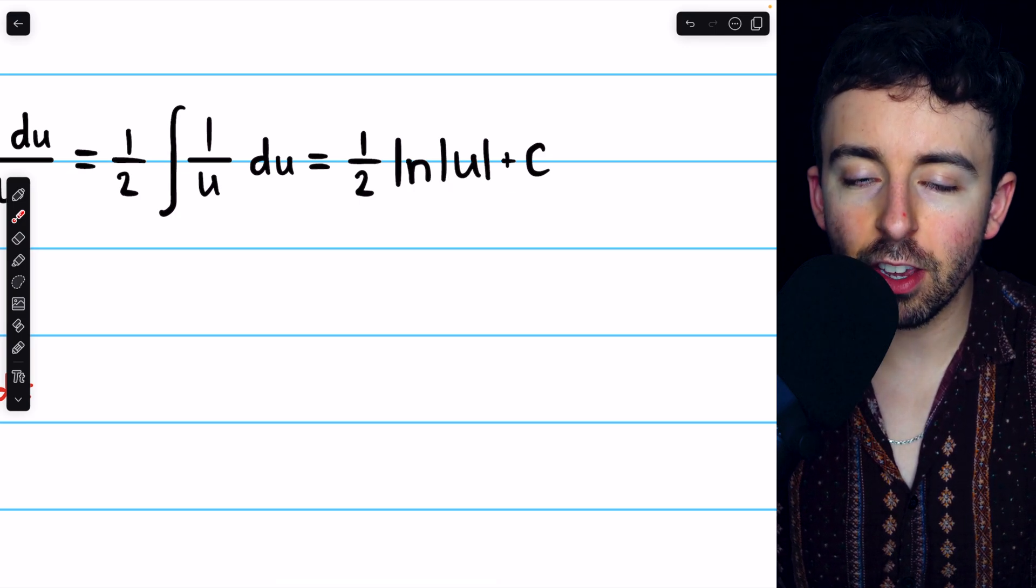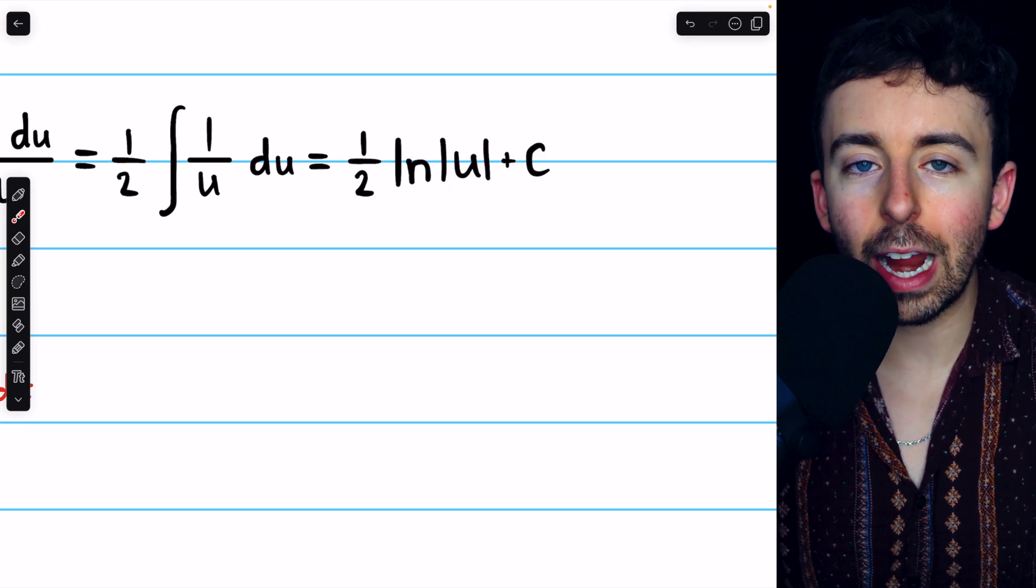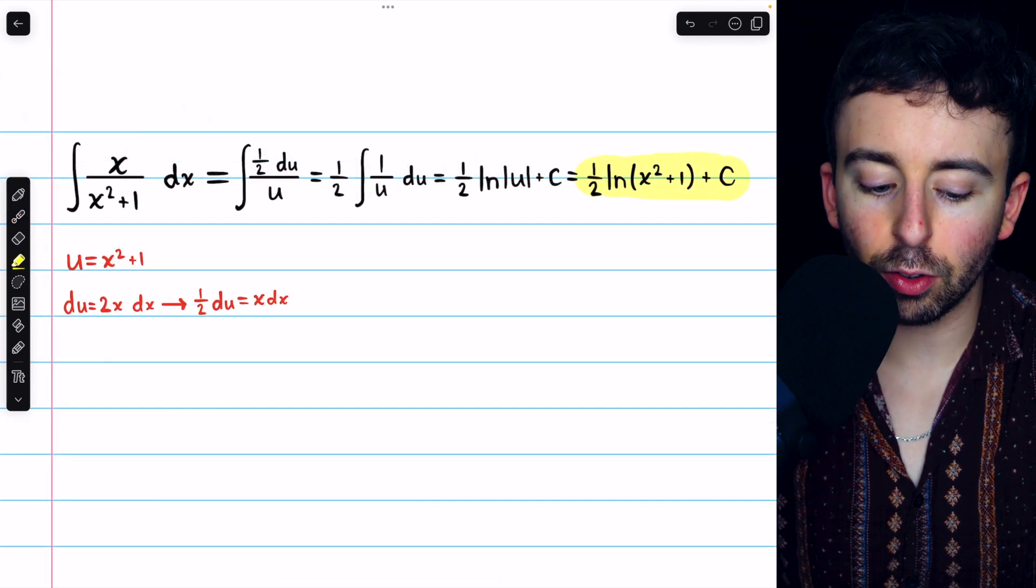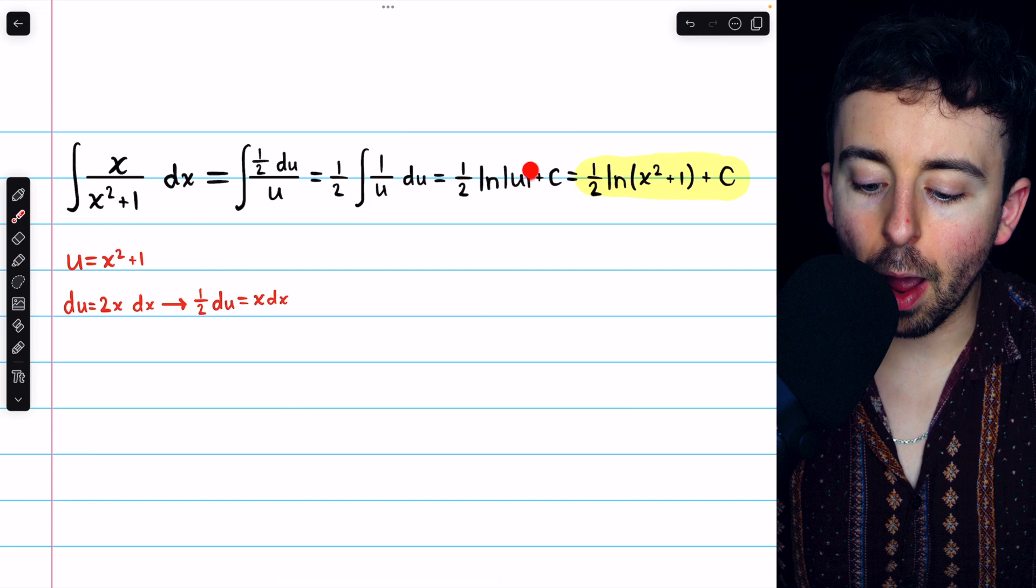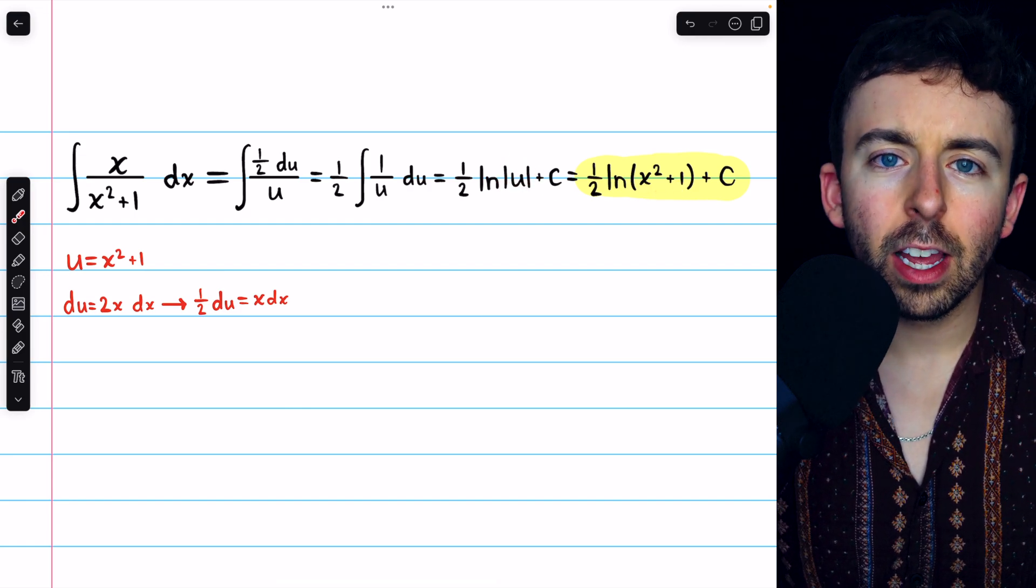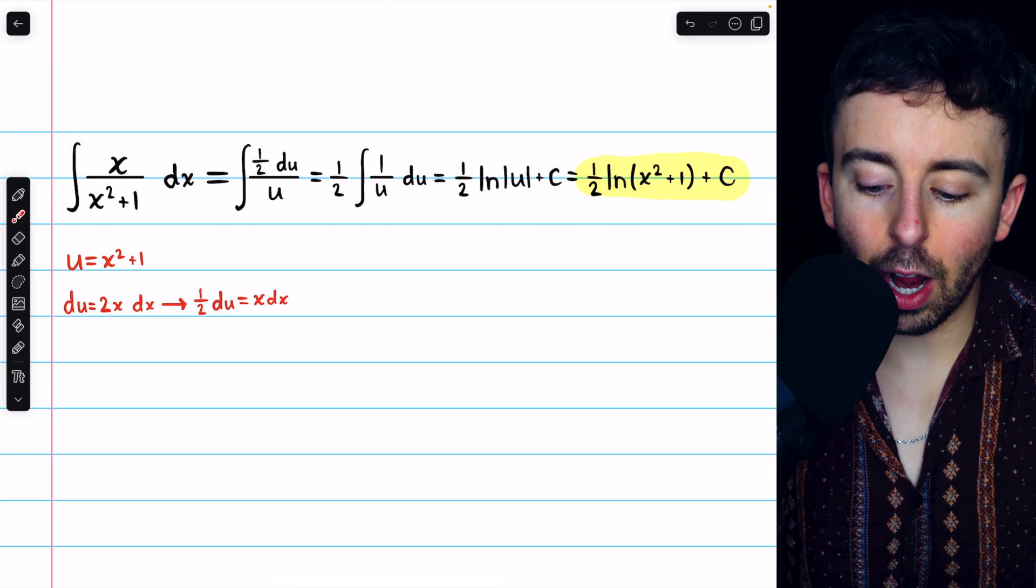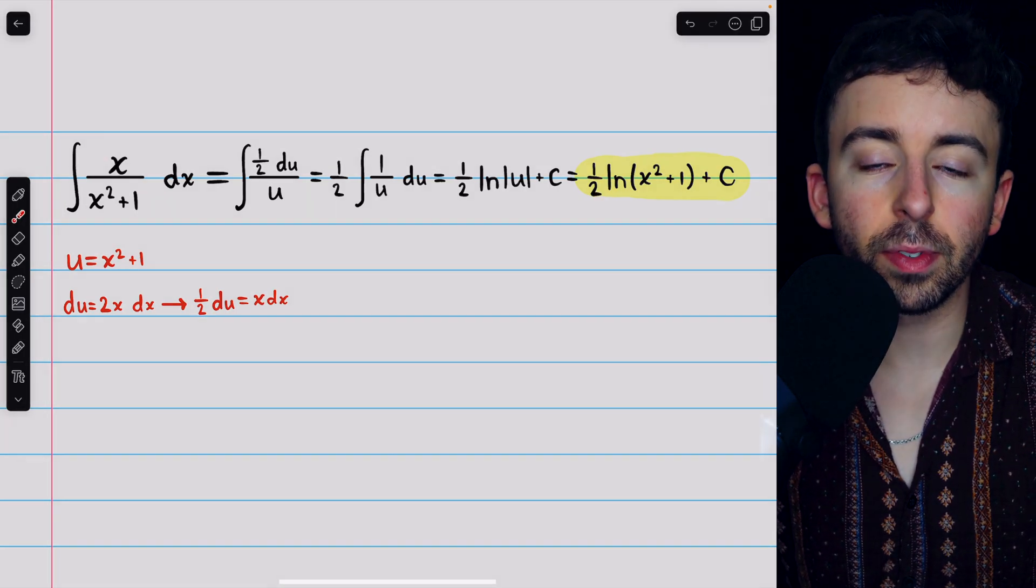Now let's just replace u with what we set it equal to so our answer is in terms of x. That's 1 half times the natural log of x squared plus 1. We're able to drop those absolute value bars because x squared plus 1 is always positive. And that's how to integrate x over x squared plus 1 using u substitution.